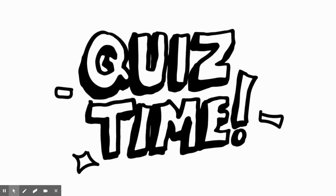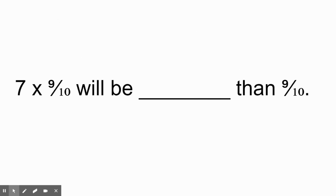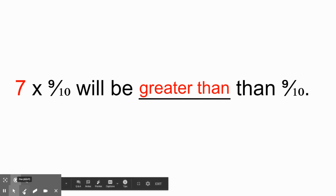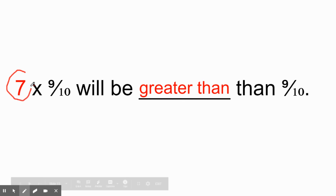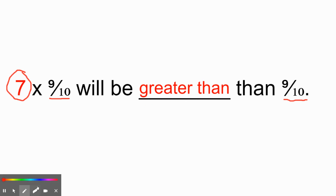Now it is quiz time. Tell me the answer to this problem: seven times nine-tenths will be blank than nine-tenths. Will it be greater than nine-tenths, less than nine-tenths, or equal? The answer is: greater. Seven times nine-tenths will be greater because nine-tenths is shown to us twice, so you look at the number only seen once — seven. Is seven greater than one? Yes, it's greater than one whole, which means the answer is going to be greater.